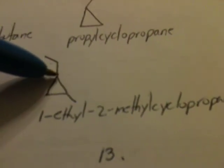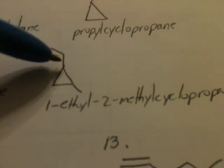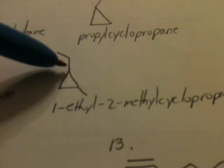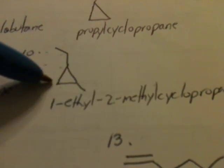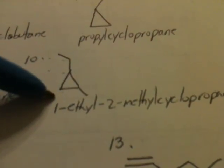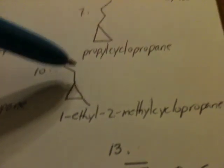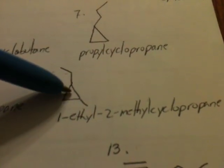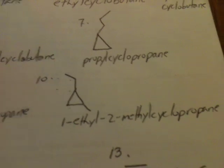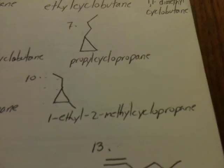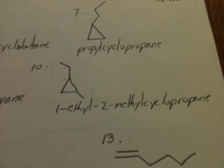Notice how we move the methyl group from the first position to the second position. Now, if I was to put it in the third position, you might be tempted to call it 1-ethyl-3-methyl, but in fact, that's still 1-ethyl-2-methyl. All I have to do is flip it over to ascertain that in fact it is the same molecule.